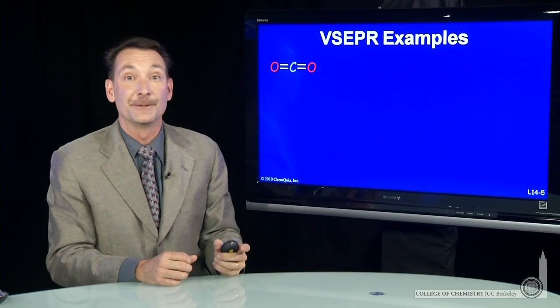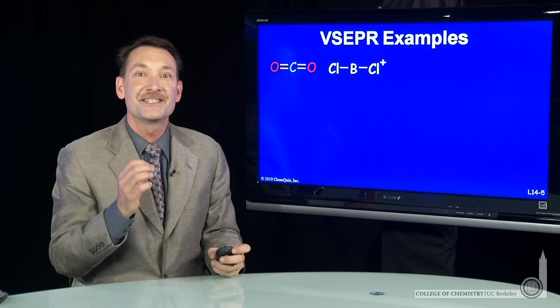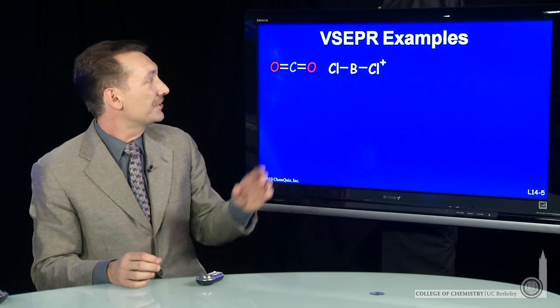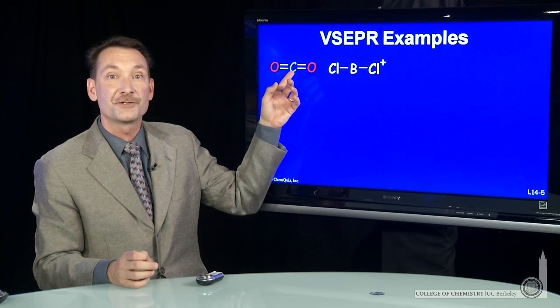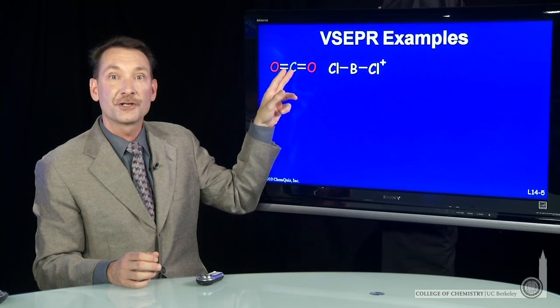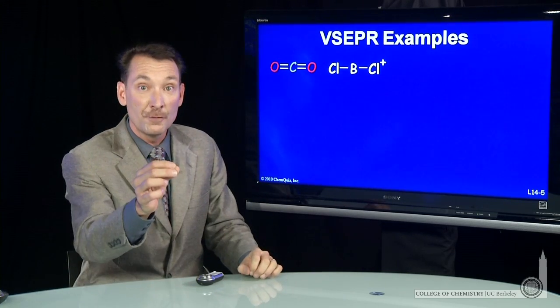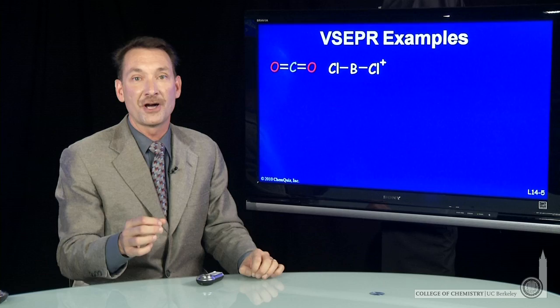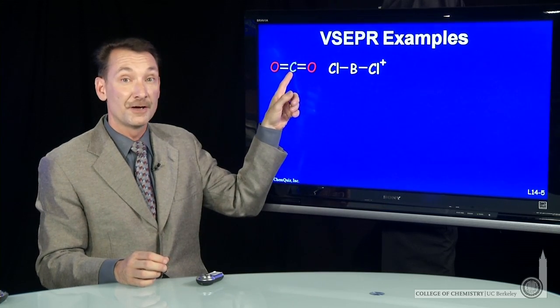Here's carbon dioxide. Carbon dioxide has steric number two, and I determine that from the Lewis dot structure. Now it's absolutely critical to get the Lewis dot structure correct because that will tell you where the lone pairs and where the bonded atoms are, and it will determine the steric number.